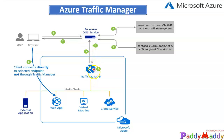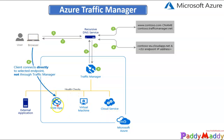Traffic Manager resolves those specific records, and the Traffic Manager name services choose the endpoint based on health checks and the routing method defined. The endpoints depend on those health checks and routing methods — we'll talk about those in a moment. There are two different things: traffic manager endpoint monitoring and the routing method. Traffic Manager then sends back information telling the client which web app to connect to, and the client connects directly to that endpoint.